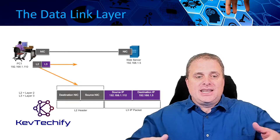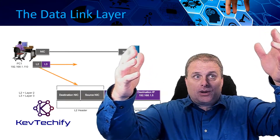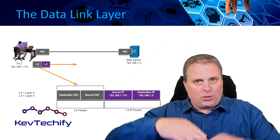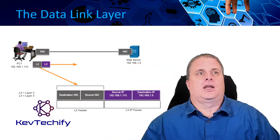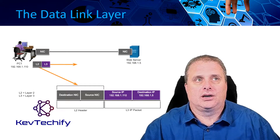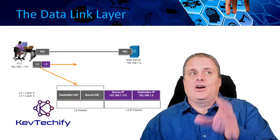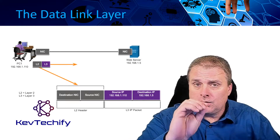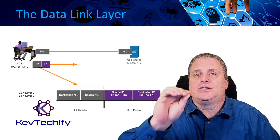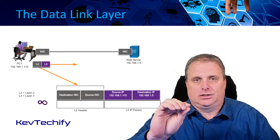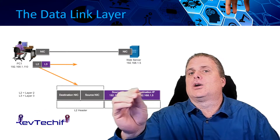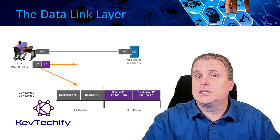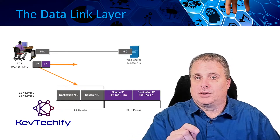The Datalink layer allows the upper layers in the OSI model to access the physical layer. It's that connection point between the upper layers and the physical layer. It also performs error detection and rejects corrupt frames. Notice: it does error detection — it doesn't do error correction. It doesn't fix a problem; all it does is identify a problem.